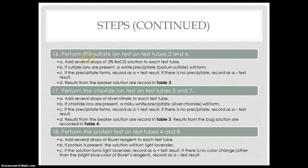We performed the sulfate ion test on test tubes 2 and 6. We added several drops of 2% BaCl2 into each test tube. If sulfate ions were present, a white precipitate — barium sulfate — would form, recorded as a positive test result. If there was no precipitate, we recorded it as a negative test result. Results from the beaker solution were recorded in table 3, and results from the bag solution were recorded in table 4.